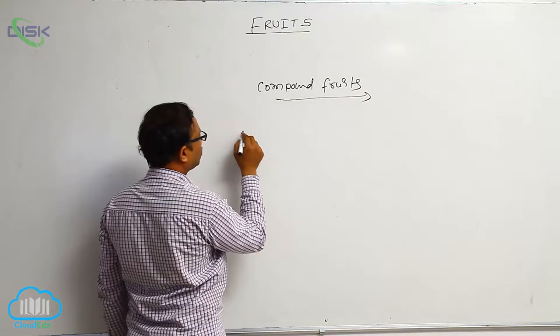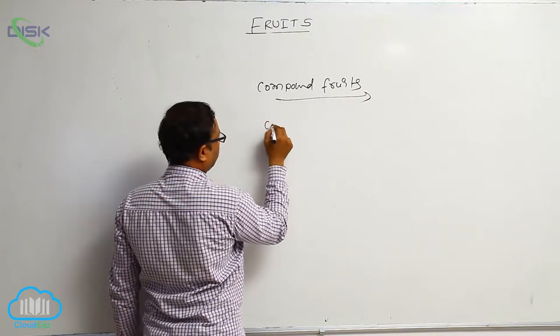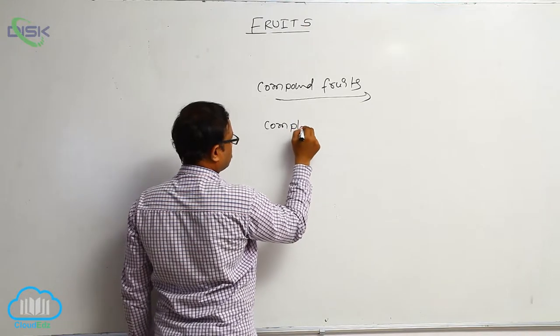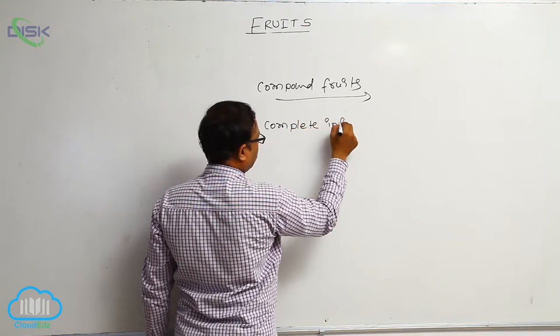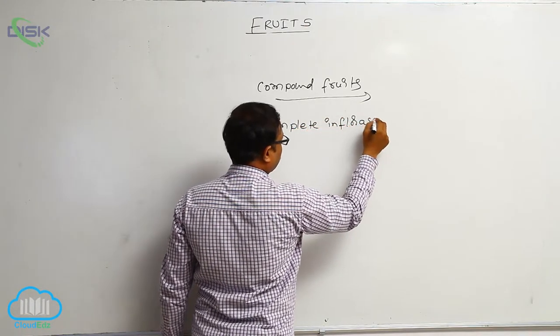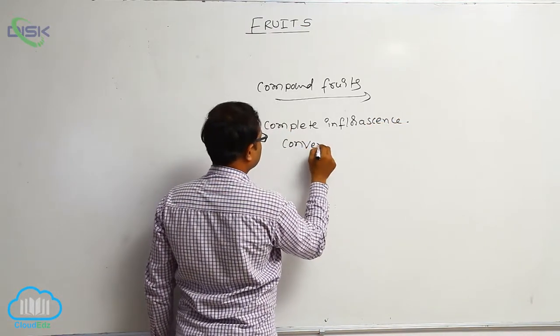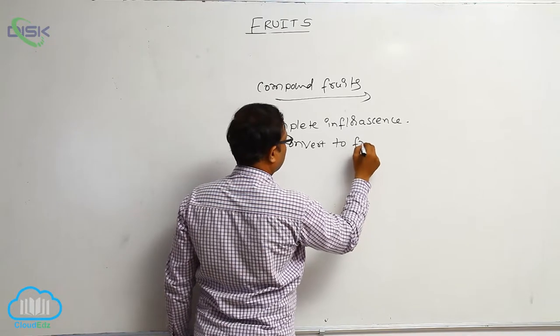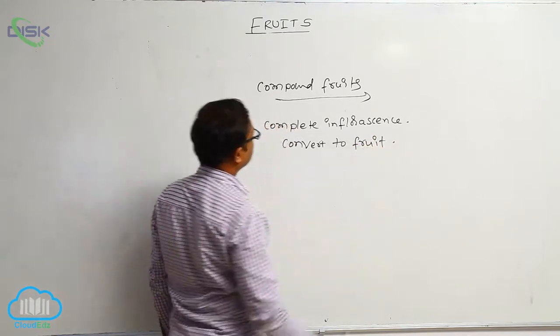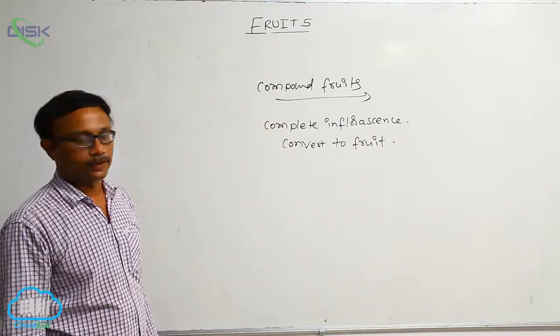What is the meaning? The fruit is formed from complete inflorescence. Complete inflorescence converted to fruit is known as a compound fruit.